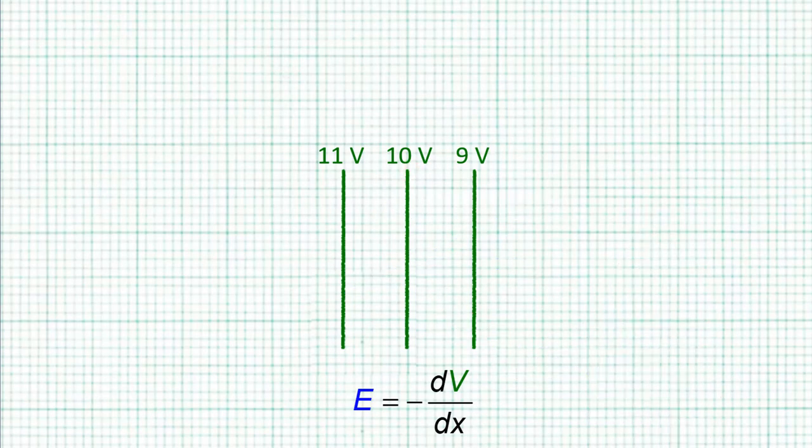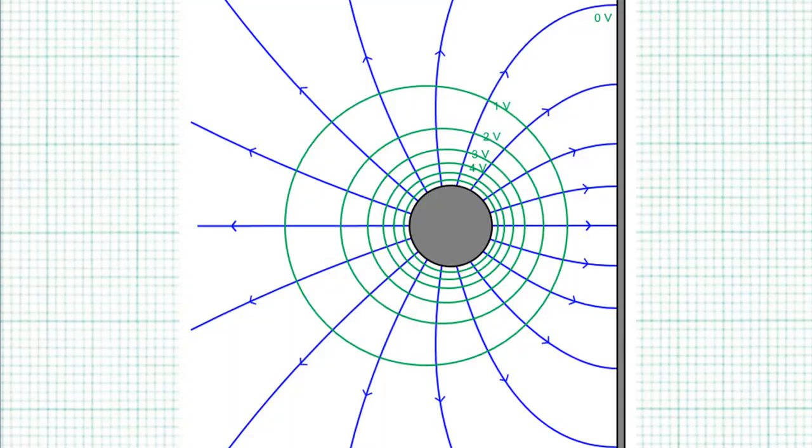That's why the electric field line can only cut equipotential lines perpendicularly, because the potential can only change in the direction perpendicular to the equipotential lines.